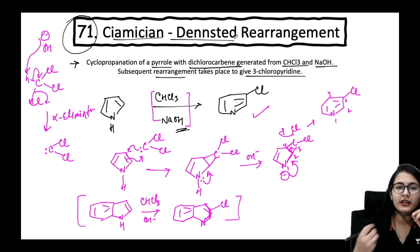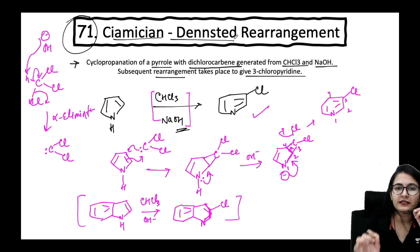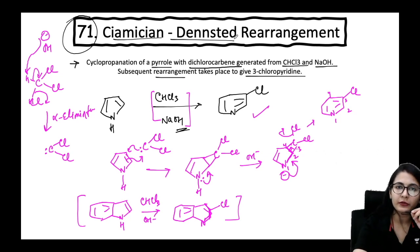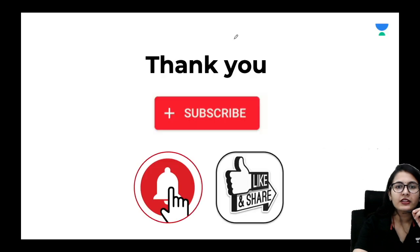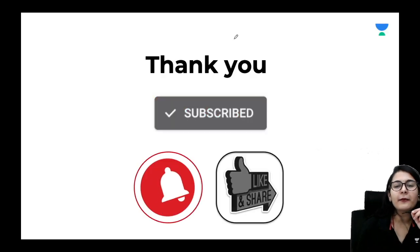So the Ciamician-Dennstedt rearrangement is another important name reaction. Always compare it with the Reimer-Tiemann reaction and study them together — it will be easier to remember.